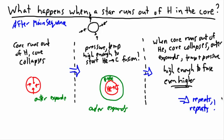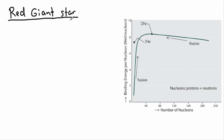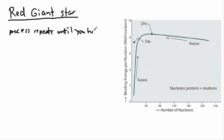This process keeps going and going. The end result is what's called a red giant star. The process repeats until you have a red giant star.